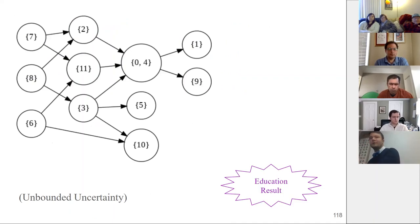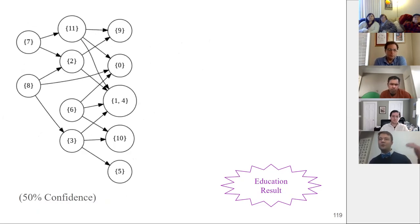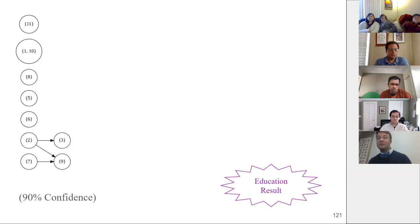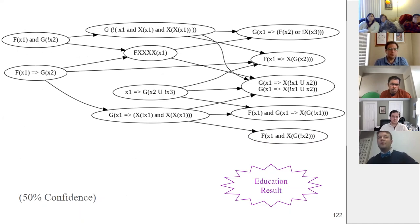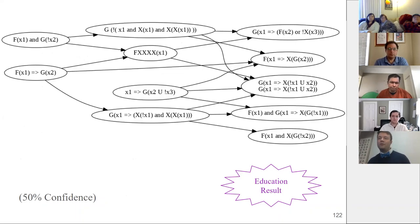What about the prerequisite map? Do we learn anything interesting about the relationships between these questions? It's a bit harder because we don't have a ton of data. As we increase our required level of confidence in discovered relationships, the number of confident relationships goes down. But looking at one of these prerequisite maps: simpler formulas are on the left, more complicated ones on the right — suggesting increasing difficulty with formula complexity. Two questions that had identical correct answers were also grouped together by this prerequisite map.